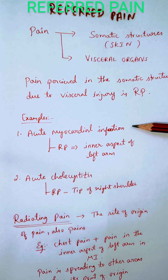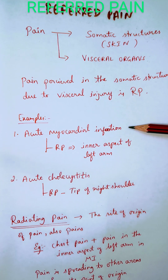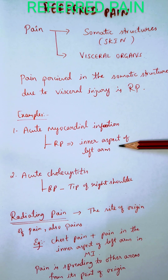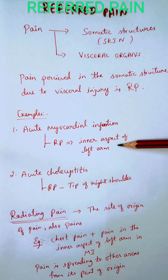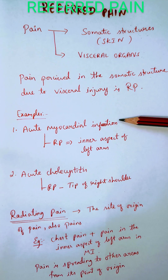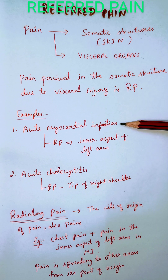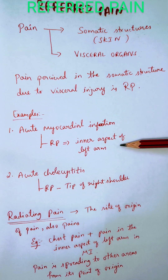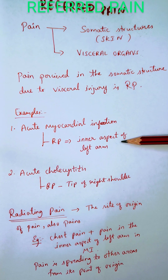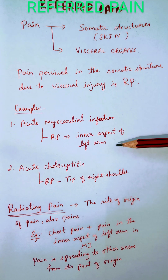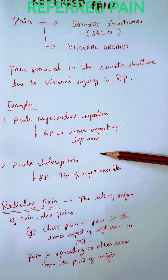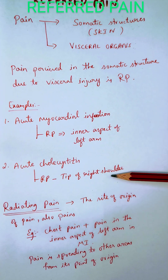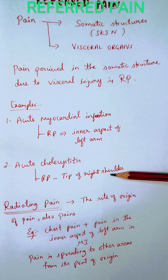The most classical example is acute myocardial infarction. The patient usually complains of pain in the inner aspect of the left arm initially — not in the chest area. So initially the patient will complain of pain in the inner aspect of the left arm.